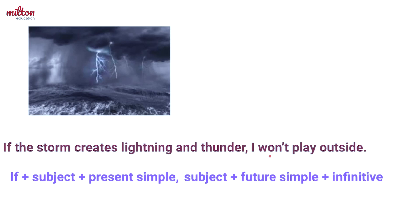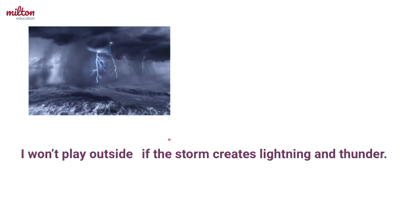Now I'm going to give you a little challenge. I want you to think of a different way to write this sentence — one that has exactly the same meaning but a different form. Remember that although the first conditional is a little bit complicated, it's also very flexible. I'll give you a minute to write your sentence on a piece of paper. Okay, time's up. Here's the correct answer: "I won't play outside if the storm creates lightning and thunder." It has exactly the same meaning as the previous sentence, but we swapped the condition and the result clause.